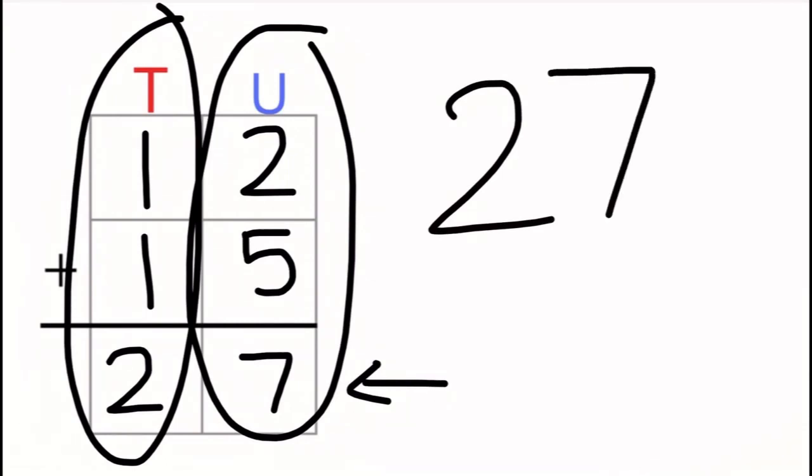Also remember that if the units add up to a number which has more than one number, like 16, the first number stays in the units column and the second number shifts into the tens. We then carry out the sum just as we would normally.